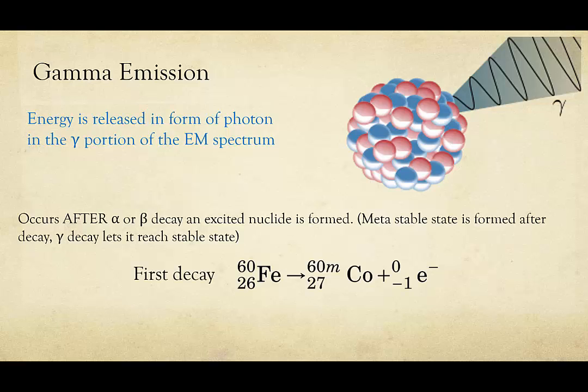So for example, let's look at iron-60. Iron-60 can undergo beta minus decay to turn into cobalt. When this happens, we get a metastable nuclei. It's sometimes denoted with a little m next to the mass number. This then has a gamma decay that occurs right afterwards.